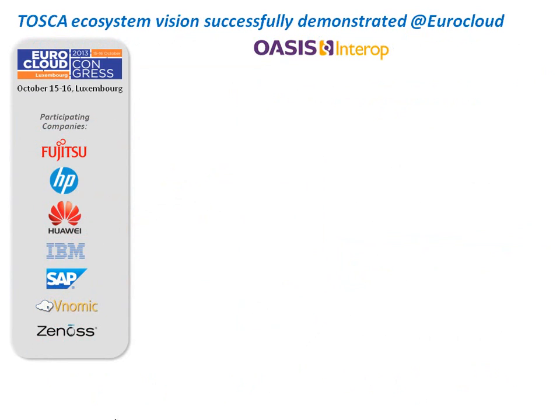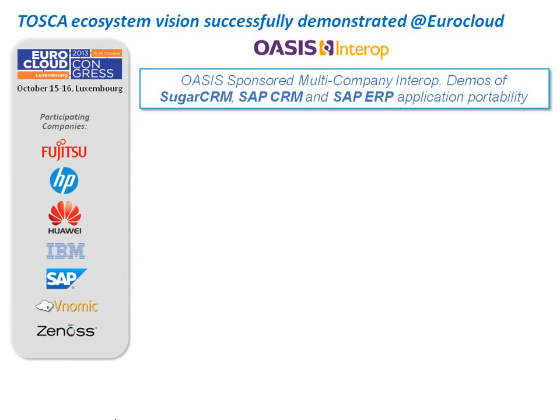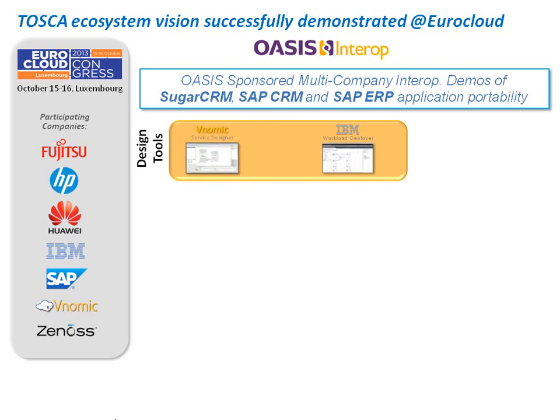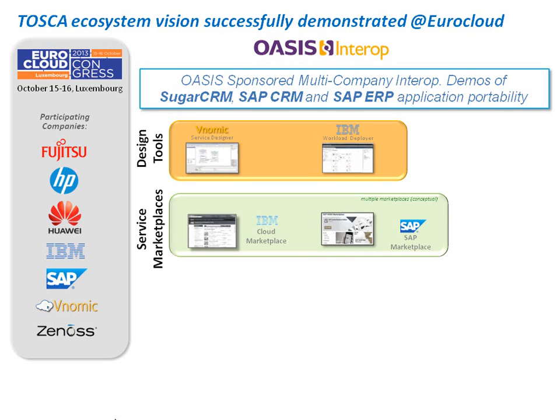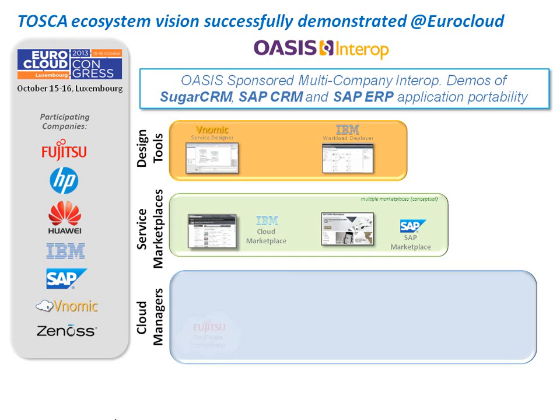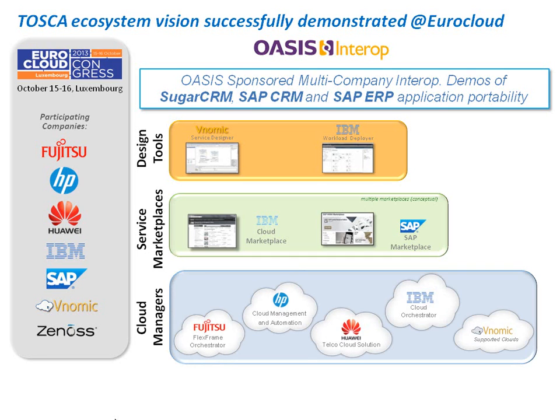At the EuroCloud event in October 2013, seven companies for the first time demonstrated portability of complex applications across very different cloud environments. Besides Tosca portability, examples of SugarCRM, SAP CRM and SAP ERP applications proved that the vision of a growing ecosystem around Tosca service templates was possible, offering design tools to model and customize Tosca applications, service marketplaces to publish and distribute Tosca application templates, cloud managers to deploy Tosca applications to cloud environments, and monitoring tools to provide template-based application health monitoring.